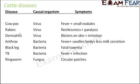Ringworm is caused by a fungus. The symptom includes circular patches on the body of the organism — small circular patches found throughout the body.